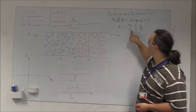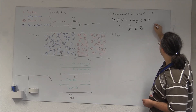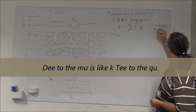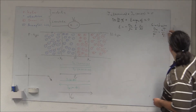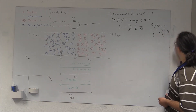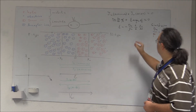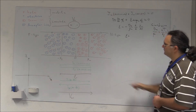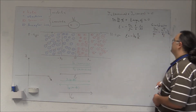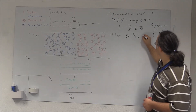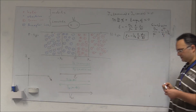Using the Einstein relation, Dn / μN = kT/q, where kT/q is the thermal voltage Vt, I substitute into the electric field expression to get: E = −Vt · (1/N) · dN/dx. This is an important equation that I will use in the following derivation.